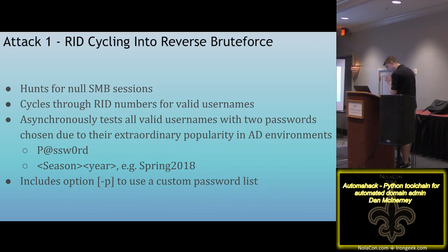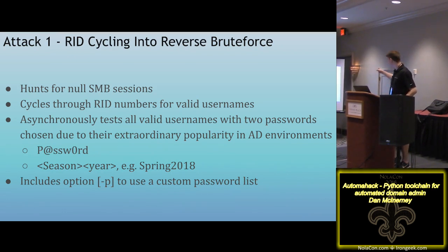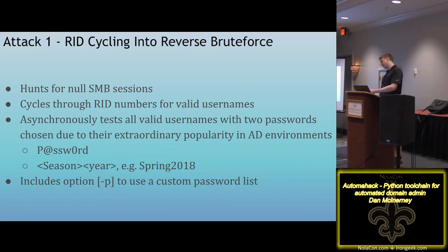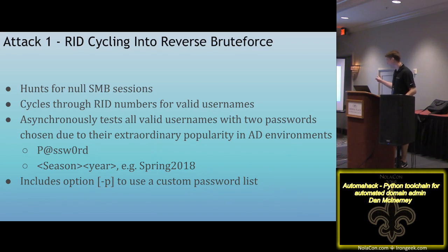Once it finds usernames, it asynchronously tests all of them using two passwords. These are the most effective two passwords on AD environments I have ever seen. It's 'Password@0' and the current season plus year, like 'Spring2018.' The tool has built-in capabilities to detect what season it is and automatically tests that password. If you can get maybe 30 to 50 users, there's an excellent chance that one of those two passwords will pop an account, giving you a plain text credential you can pump into Bloodhound.